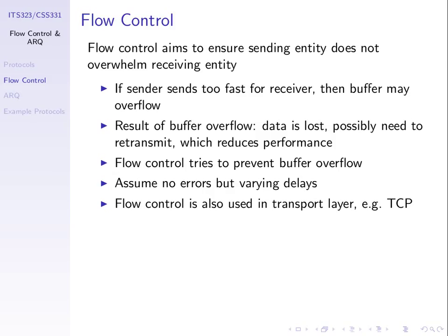Flow control is a mechanism to make sure that the sender doesn't overflow the receiver. It's needed in cases where the sender has the capability to send very fast, but the receiving computer receives frames containing data and takes a long time to process them. If the receiver receives too many in a short period of time, it overflows because the receiver has some memory allocated to receive the frames — if it fills up, it cannot receive anymore. That memory is often referred to as a buffer.